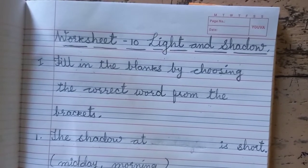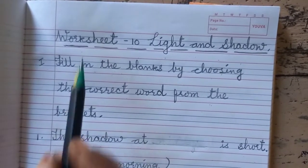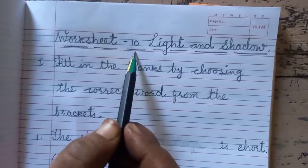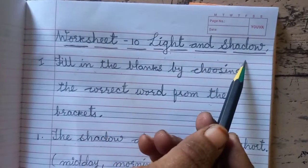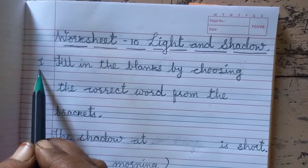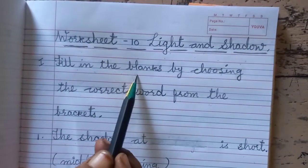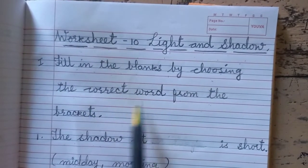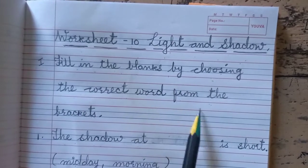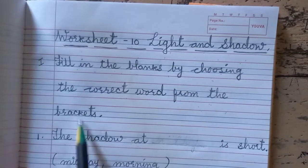Dear children, today I am going to write worksheet 10, light and shadow. Question 1: Fill in the blanks by choosing the correct word from the brackets.